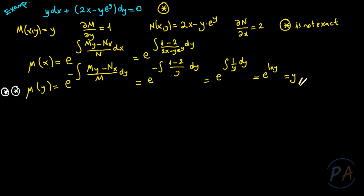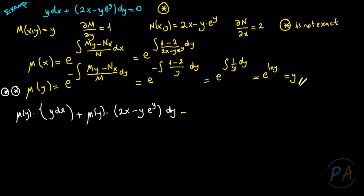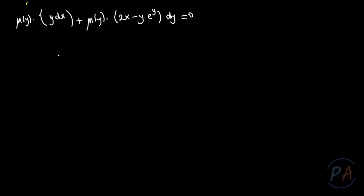Multiplying the equation (star) by μ(y), I name the result (double star): μ(y)·y dx plus μ(y)·(2x minus y·e^y) dy = 0. After multiplying, the equation becomes y² dx plus (2xy minus y²·e^y) dy = 0. This gives me a new differential equation, which I name (three stars).